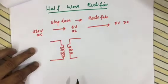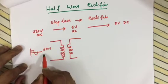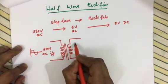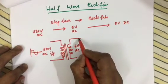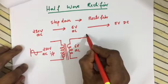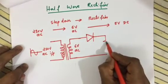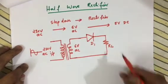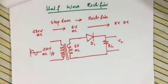In the step-down transformer, the primary winding is higher than the secondary winding. We have a 230 volt AC input on the primary side and 6 volt AC on the secondary. After this we connect a diode D1 and a load resistor RL in the half wave rectifier circuit. The output is taken across the load resistor RL.